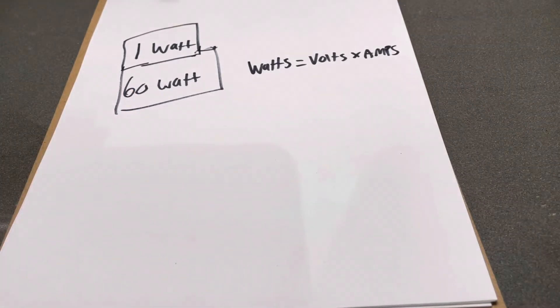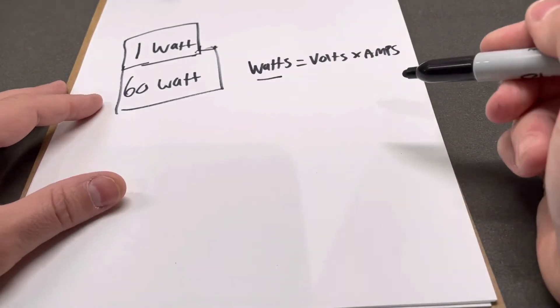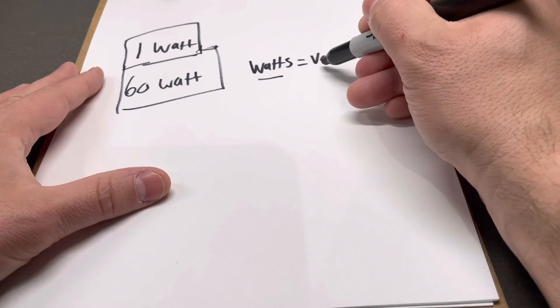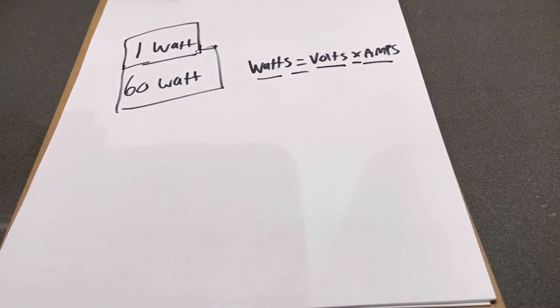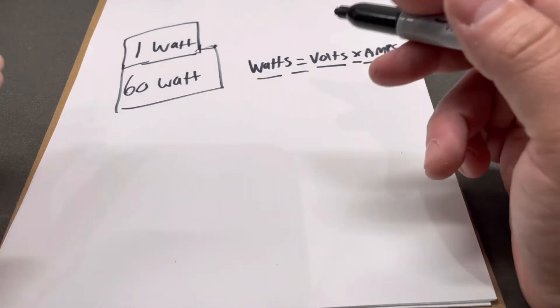Now these are all measurements, so the amount of watts that you have in a unit is going to be equal to the amount of volts times the amount of amps. Very simple. That's how you're going to calculate it.